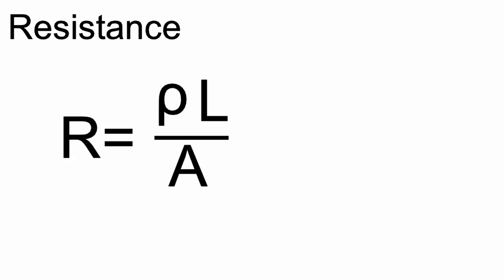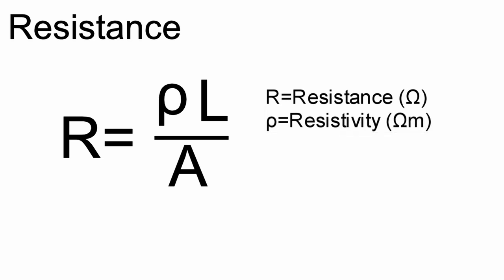To explain resistance, let's see how it's calculated. This is the equation that governs resistance. Resistance is equal to the resistivity of the material, multiplied by its length, all over its cross sectional area.